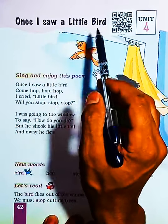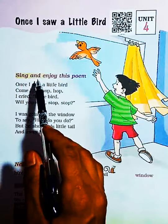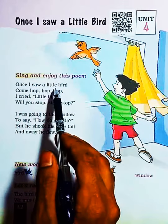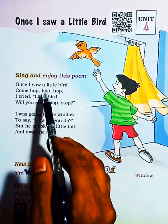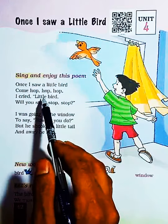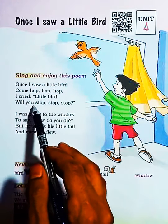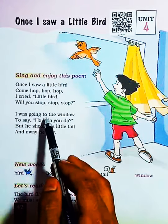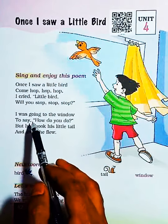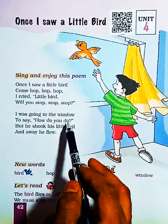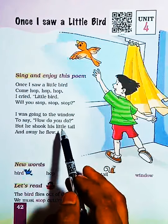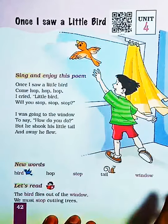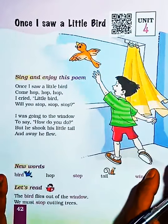Once I saw a little bird — sing and enjoy this poem. Once I saw a little bird come hop, hop, hop. I cried, 'Little bird, will you stop, stop, stop?' I was going to the window to say how do you do, but he shook his little tail and away he flew.